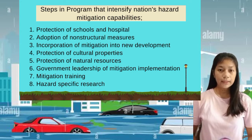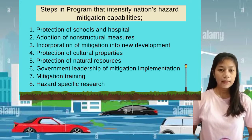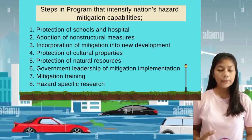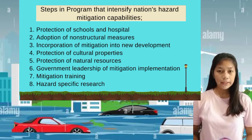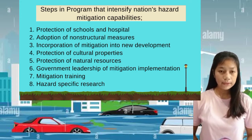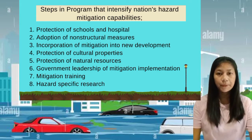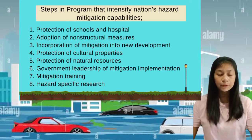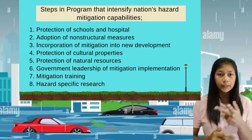Non-structural measures involve knowledge and practices to reduce disaster impacts — for example, training, building codes, and public awareness raising. Structural measures are any physical construction like dams, ocean wave barriers, and evacuation centers. Number three, incorporation of mitigation into new development. There is new development to address natural hazards through land use planning, zoning regulations, and building codes.